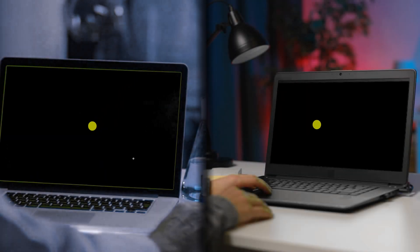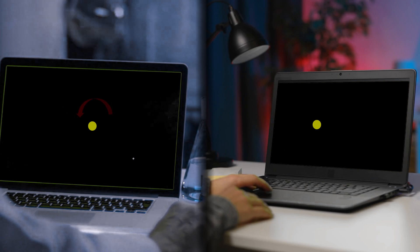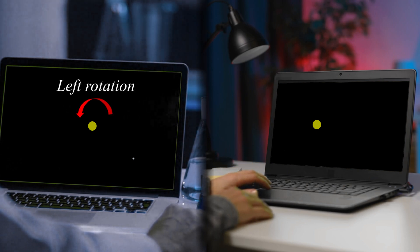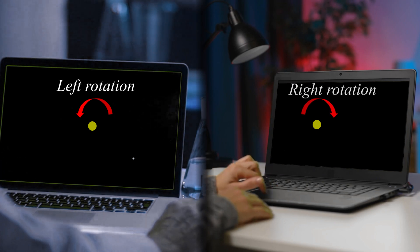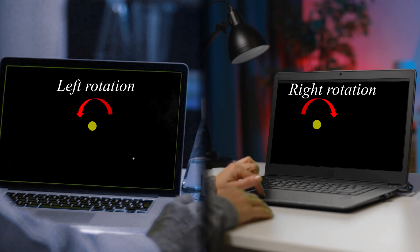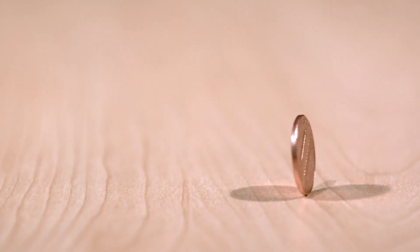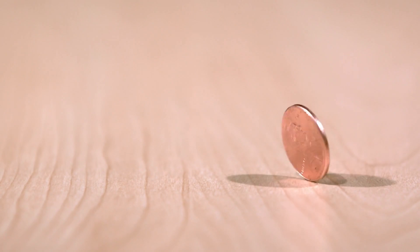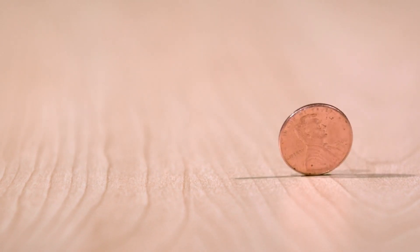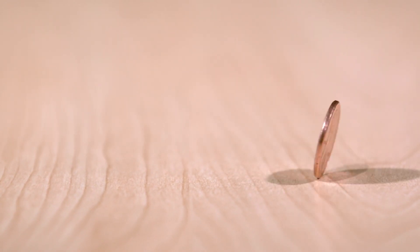For example, imagine that the two fragments fly off to two separate labs. A researcher at lab A observes his fragment and notices that it is rotating counterclockwise. At that very moment, a researcher at lab B would notice that her fragment is rotating clockwise. The states are shared much like both sides of a coin. By observing the state of one fragment, the shared state of the other fragment is also confirmed.